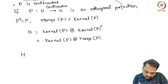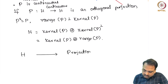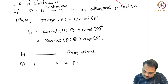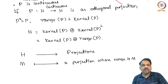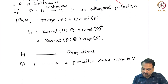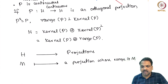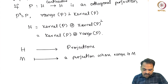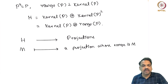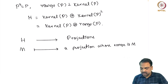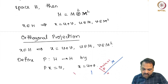What we have shown is: given any closed subspace of a Hilbert space, we can get a projection whose range is M. Thus there is a one-to-one correspondence between closed subspaces of a Hilbert space and the set of all continuous orthogonal projections. It is sometimes useful to discuss properties of a subspace using an operator or map, and vice versa. This concludes the discussion of the Projection Theorem.